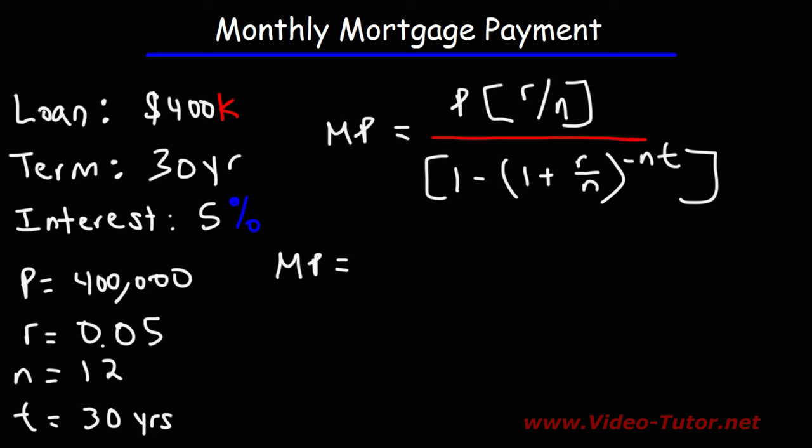So we have P, which is $400,000, and then times R. R is 0.05, divided by N. N is 12.